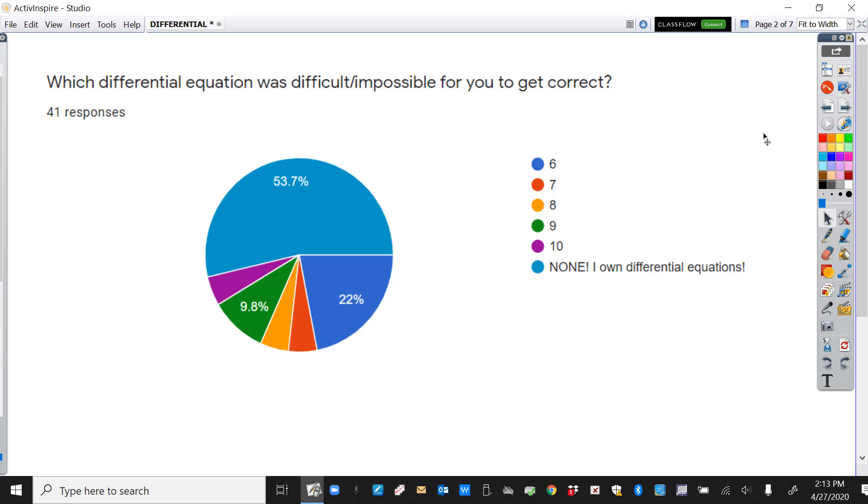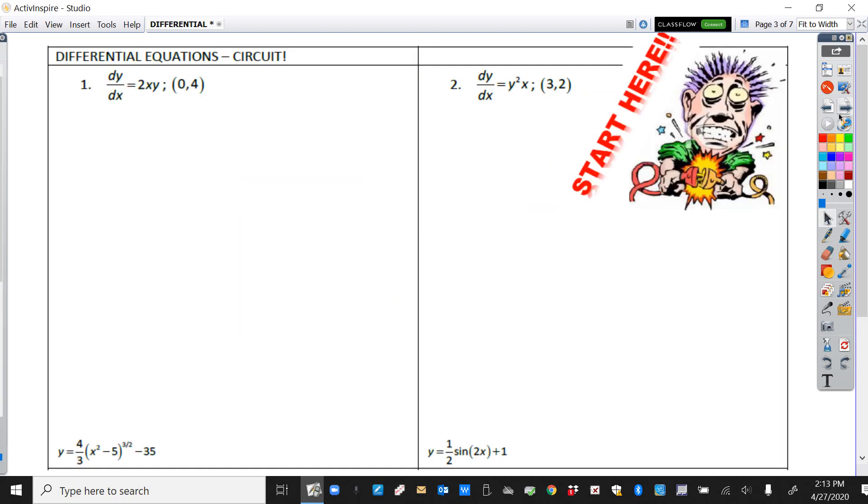It's a differential equation circuit today. Remember, doing these perfectly and showing work perfectly I think is going to be an important part of the AP test, or at least it stands a good chance. Remember you're only going to have two free response questions and hopefully one of them will be a differential equation since so many of you own them. Let's look at our circuit and notice it says start here right there at the top, and that's the one that's like the number six that people said was the most difficult one.